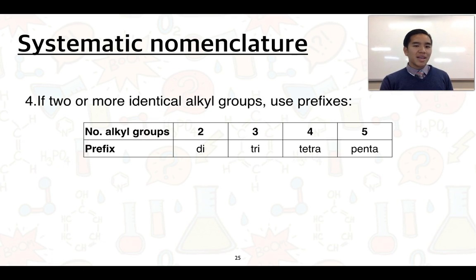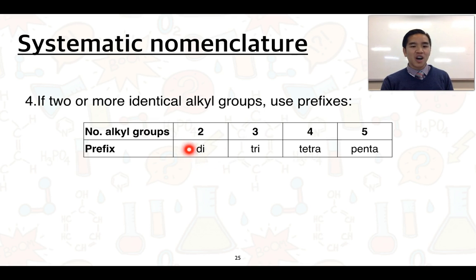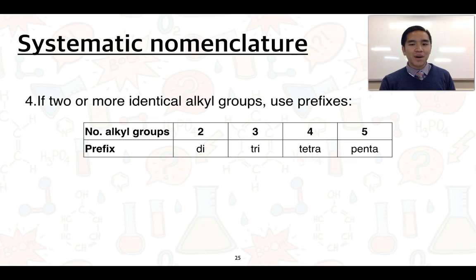Rule four: if there are multiple alkyl groups that are the same, we indicate the quantity using prefixes. Two identical groups use 'di', three use 'tri', four use 'tetra', and five use 'penta'. Rarely do we see more than that.